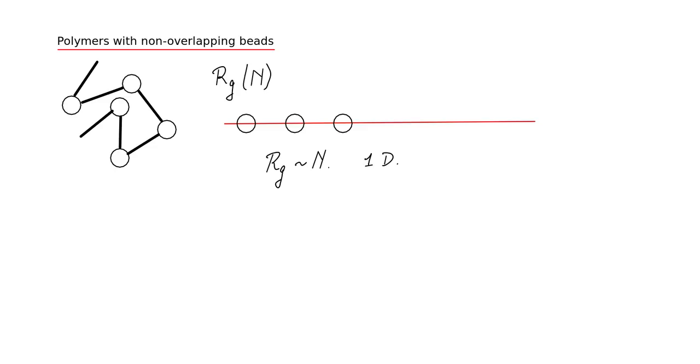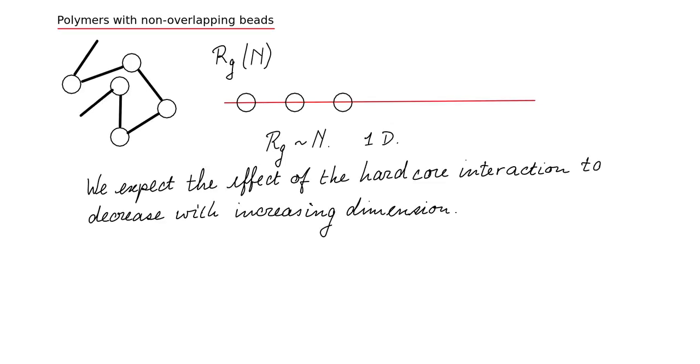In 2d we have many more possibilities than in 1d but we see that it's easy for the beads to overlap. So the effect of the interactions is expected to be really significant in 2d. In three dimensions, you can imagine that it's easier for the beads to avoid each other. So what we expect is that the effect of the hard core interaction which prevents the beads from overlapping decreases with increasing dimension. It's also useful to be aware of a benchmark. If there is no hardcore repulsion, that corresponds to the freely jointed chain and the Rg scales with the square root of the number of beads.